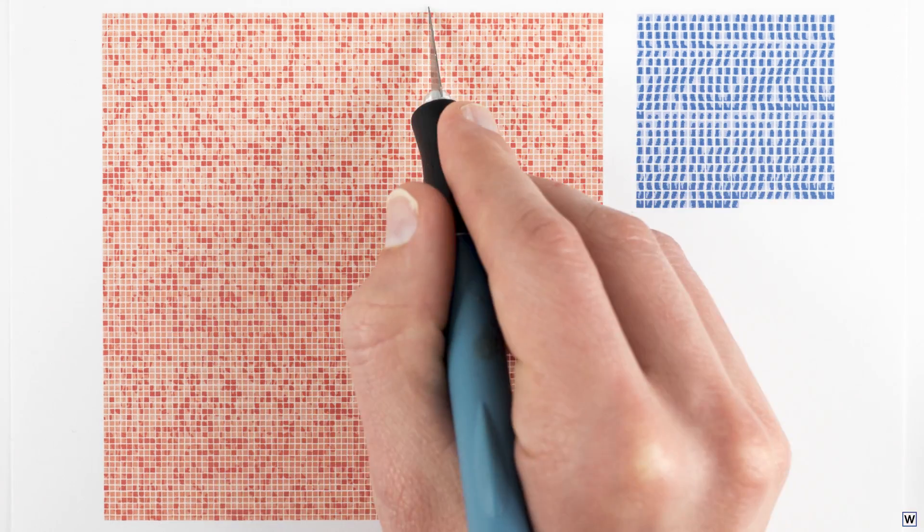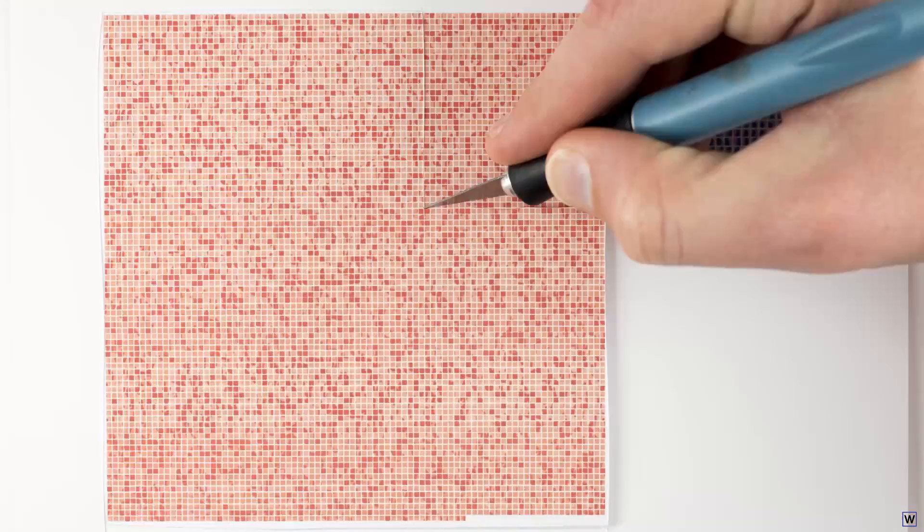Now, we could make our data more balanced by throwing away a bunch of our negative examples. But this really isn't an ideal solution. What we really need here is a more robust method for determining which split is best.